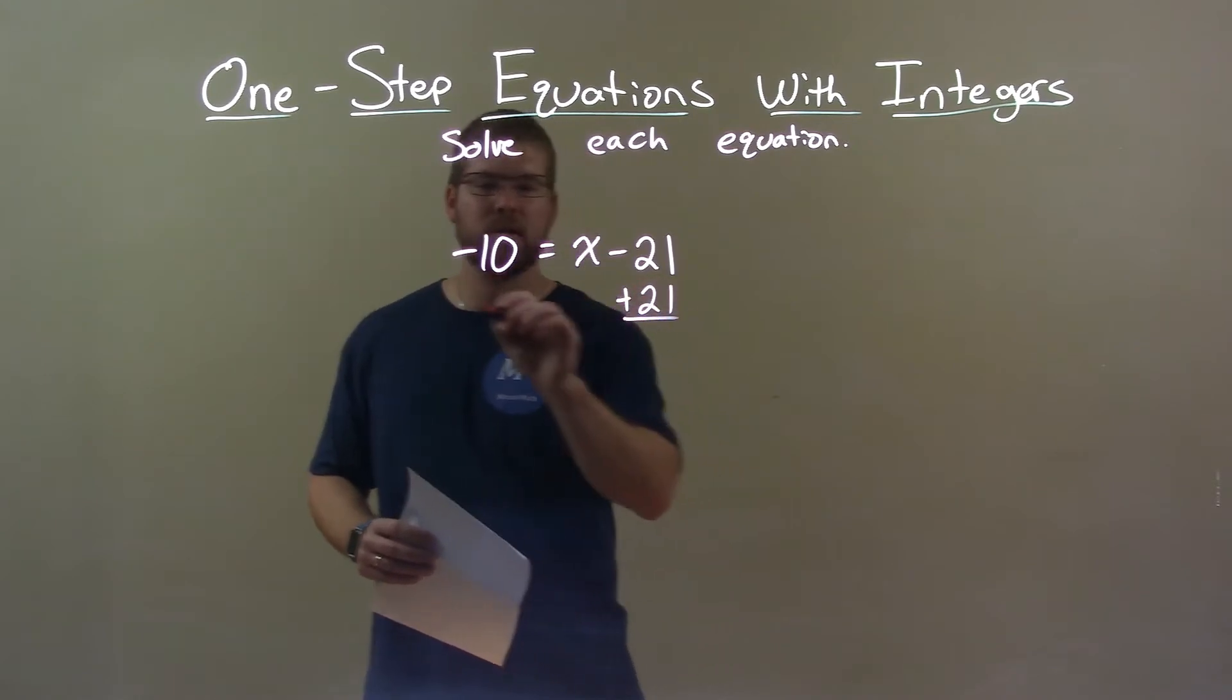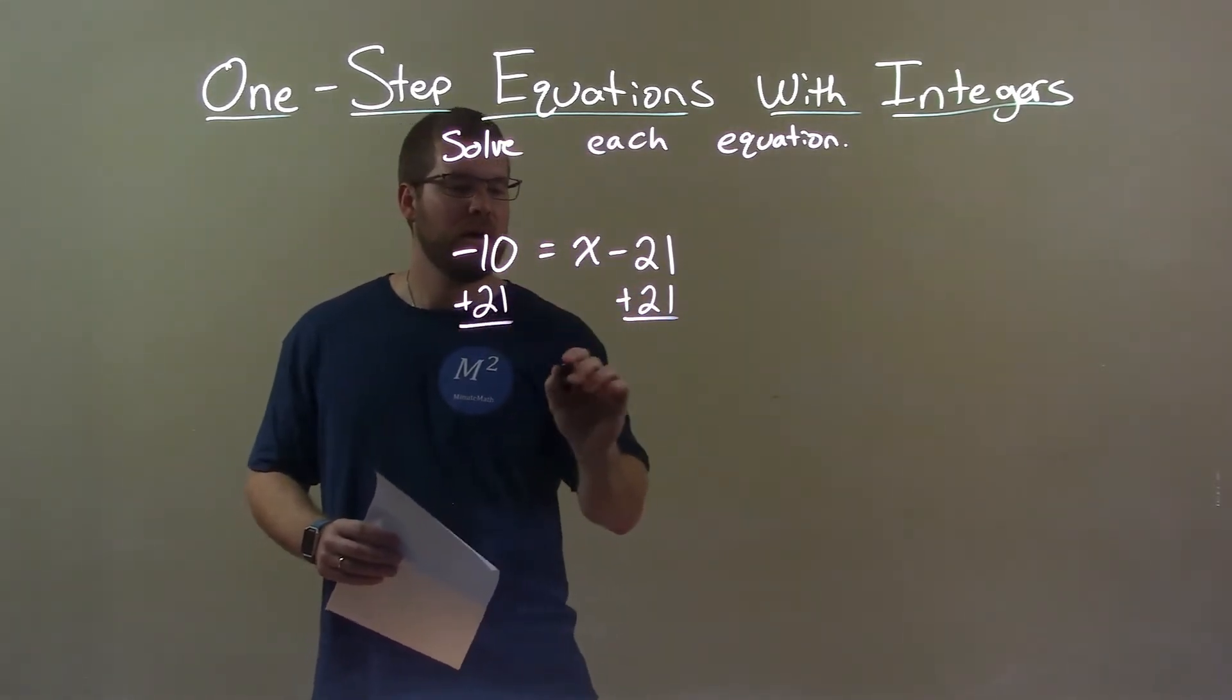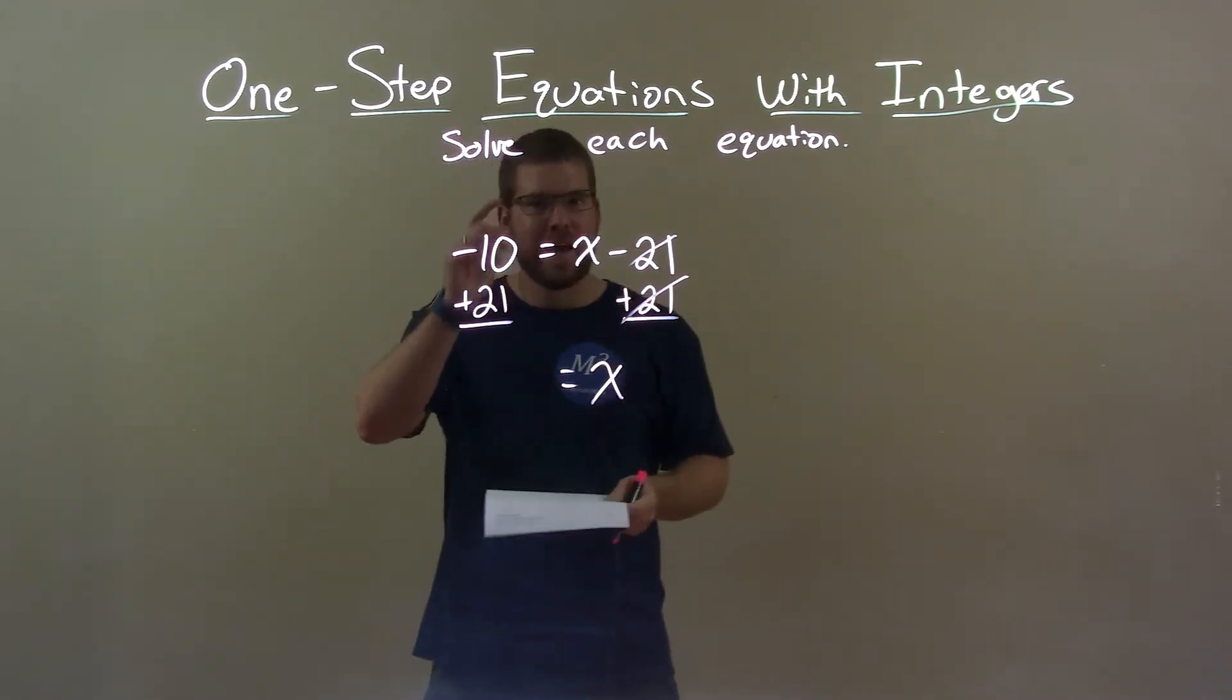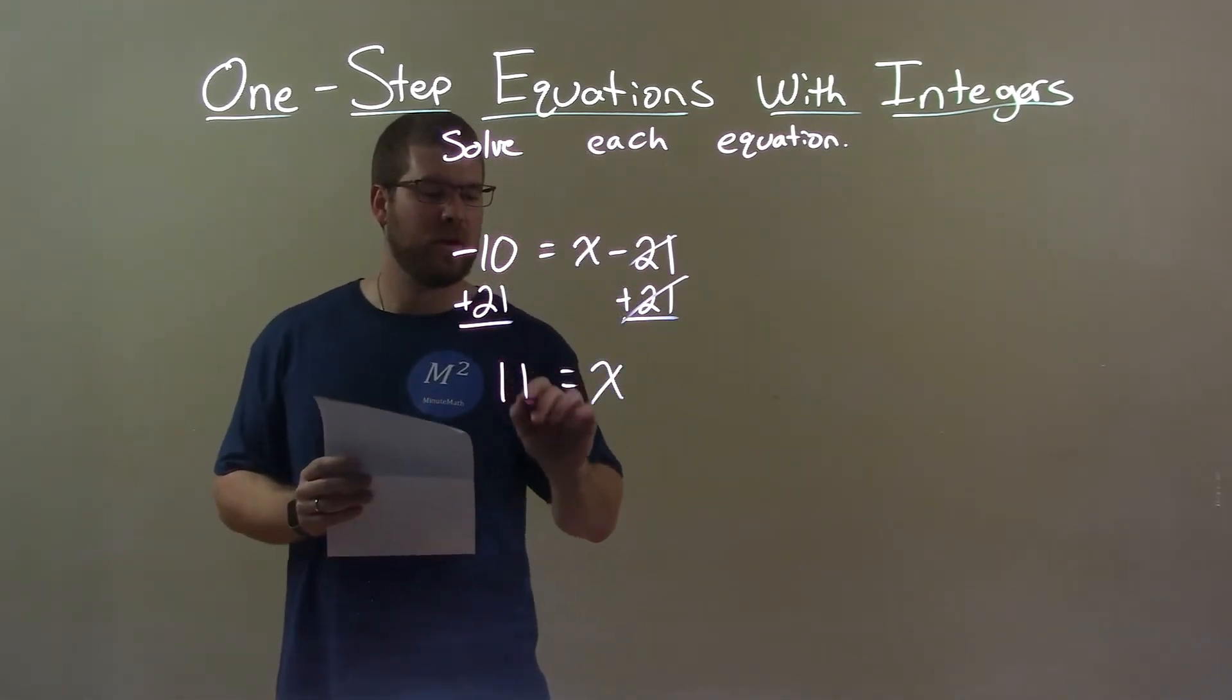I add 21 to both sides. This gives me x by itself. The 21's will cancel. Now, negative 10 plus 21 is a positive 11.